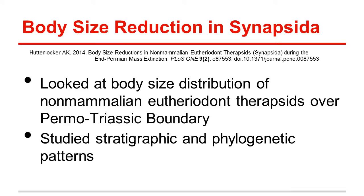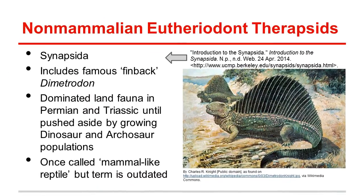Adam K. Huttenlocker studied the body size distribution of non-mammalian therapsids, or synapsida, over the Permo-Triassic boundary to determine whether body size reduction occurred after this mass extinction. He was also looking at patterns of body size change to determine if changes were random or occurred based on certain environmental or evolutionary patterns. Synapsida is comprised of mammals as well as pre-mammalian branches. A famous example of a synapsid is the finback Dimetrodon, pictured here. They were dominant in the time period examined in this study, but their numbers began to decrease with the Permo-Triassic extinction as dinosaurs and archosaurs became prominent.